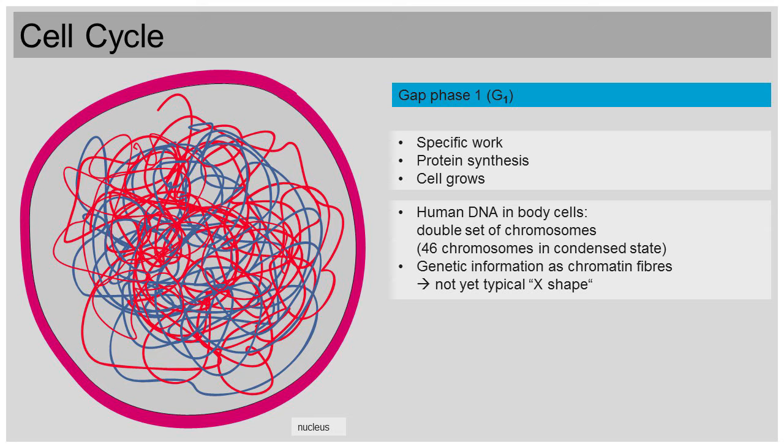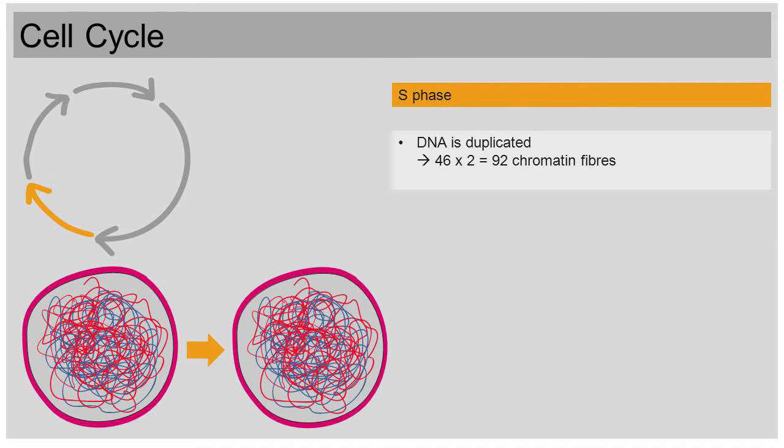So now we can finally move on to S phase. During S phase of interphase, the genetic information, the DNA, is duplicated. This process is called chromosome duplication. As a result, there are now 92 chromatin fibers in the nucleus instead of 46.